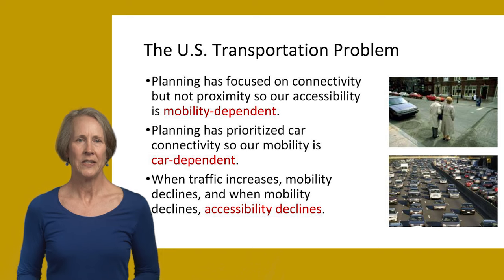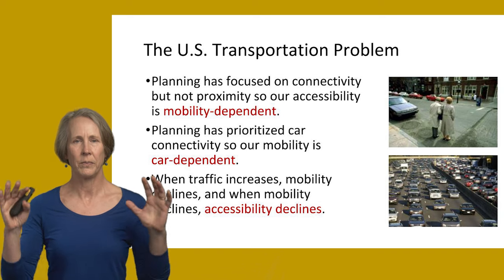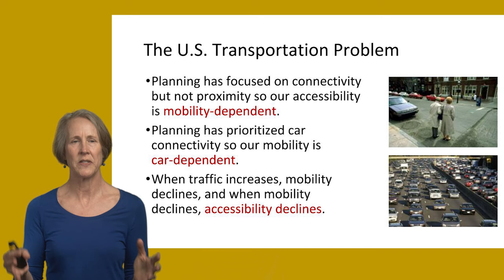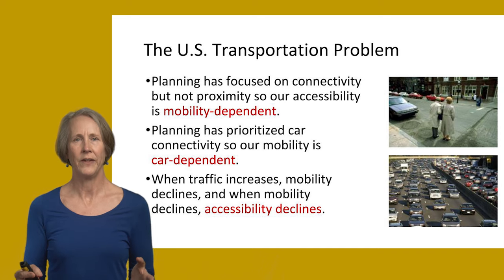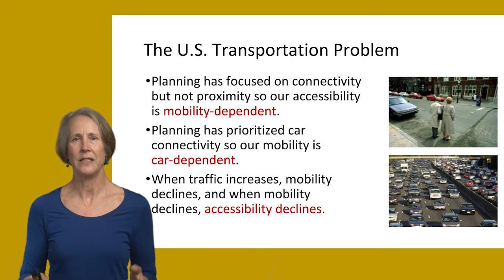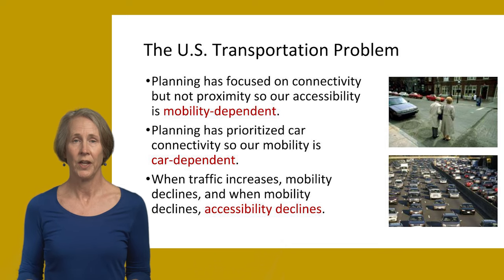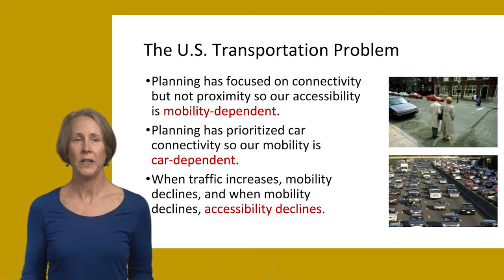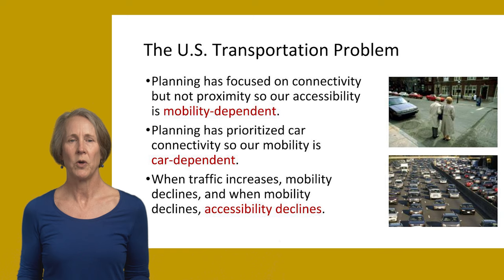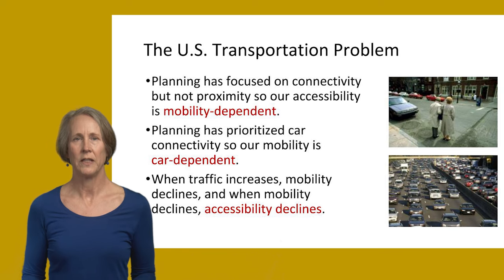The problem in the US is that our planning has focused on connectivity but not proximity, so our accessibility is mobility dependent — we are dependent on being able to move around easily to get to our destinations. Our planning has prioritized cars and car connectivity, so our mobility is car dependent. And when traffic increases, mobility declines, and when mobility declines, accessibility declines.